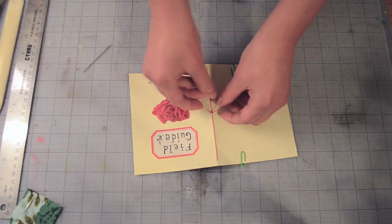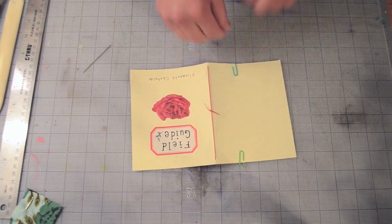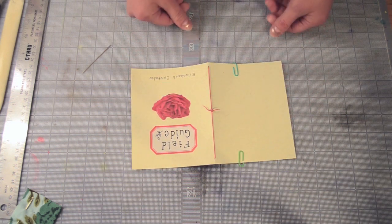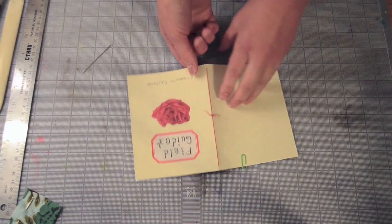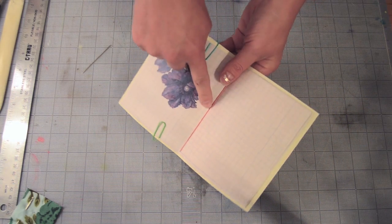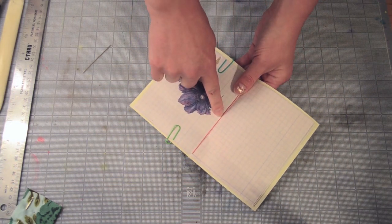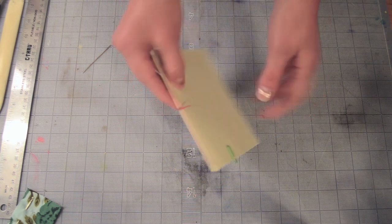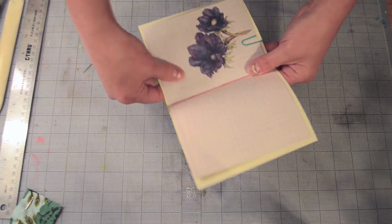And alternatively, I tend to like this little knot on the outside, but if you want a neater look, you can start from the inside and then your threads will end up on the inside of the book. So, it makes the outside look a little bit neater. And there you have it.